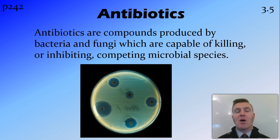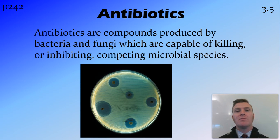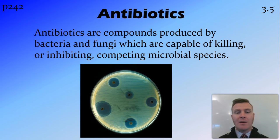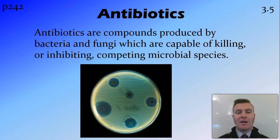So firstly, what is an antibiotic? An antibiotic is something that is produced by a living thing, usually a bacteria or fungi, that is capable of killing and competing with other microbes around it. Here you can see a petri dish with a whole heap of bacteria and some spotting discs containing antibiotics — little fungi — and you can see they're producing an antibiotic, with a zone of clearing around them where it's inhibiting the growth of bacteria.